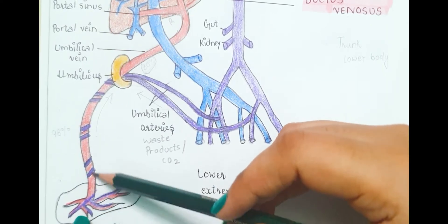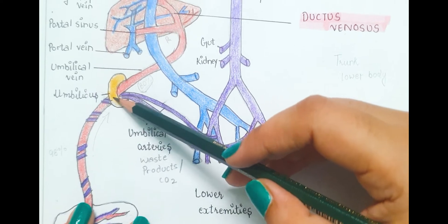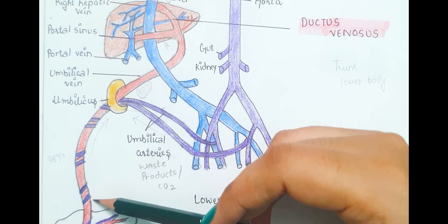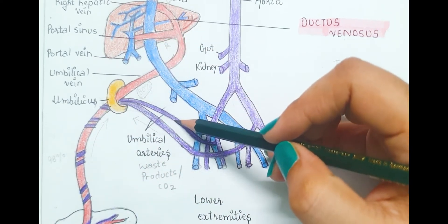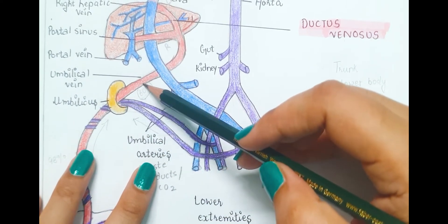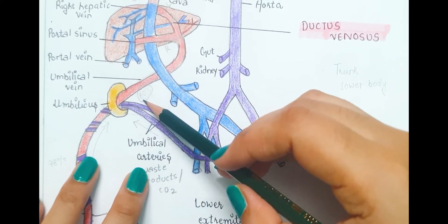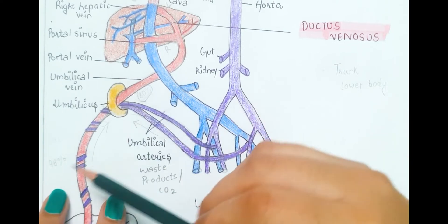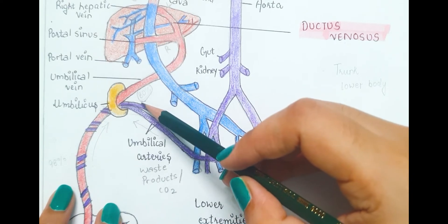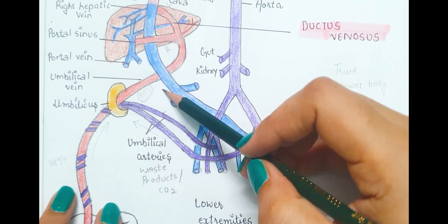The placenta connects to the fetus via the umbilical cord, which has one umbilical vein and two umbilical arteries. The umbilical vein carries oxygenated blood from the placenta to the fetus, while the umbilical arteries carry deoxygenated blood from the fetus to the placenta. This oxygenated blood entering the fetus is 80% saturated — compared to 98% saturation in adults.